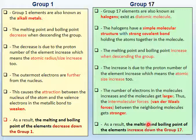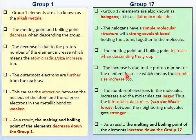So even though both groups have increasing proton number, the type of bonding from group 1 and group 17 is different — and this is what matters.